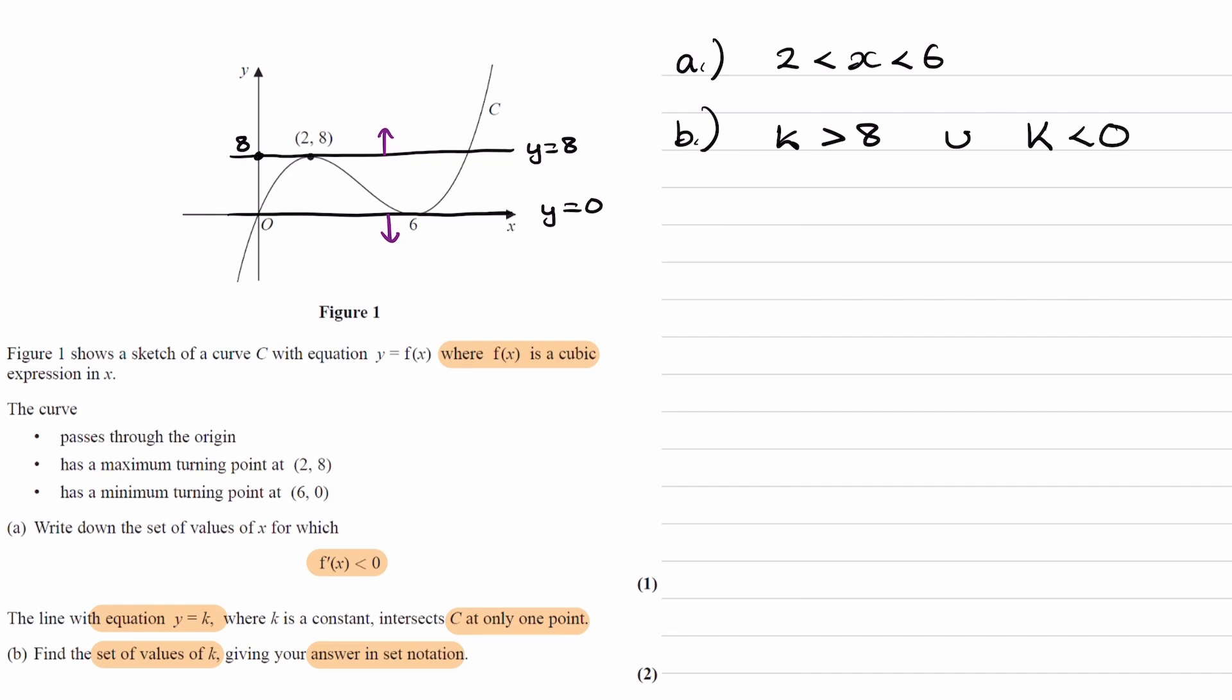We have to put this in set notation. So k colon k is greater than 8, little squiggly brackets, or k colon k is less than 0. We have to use the OR symbol here.